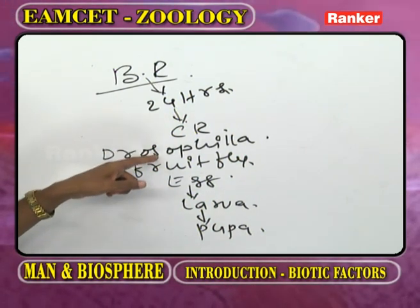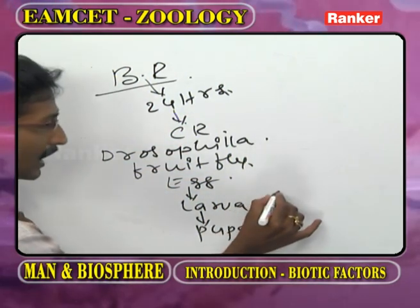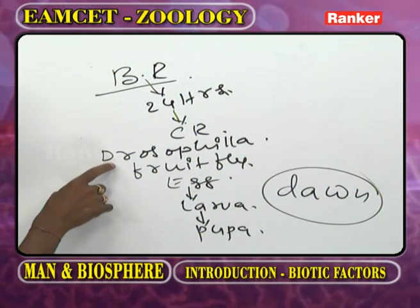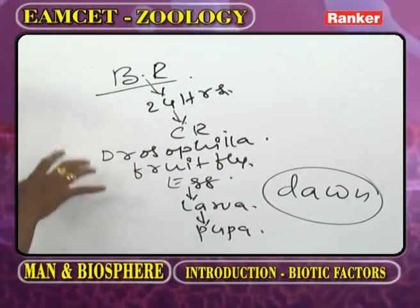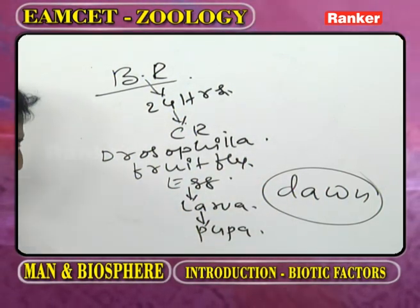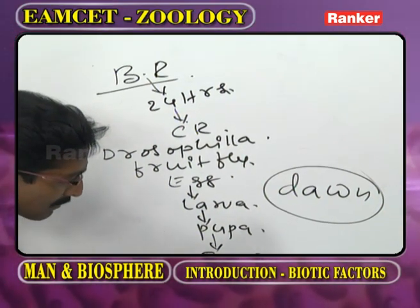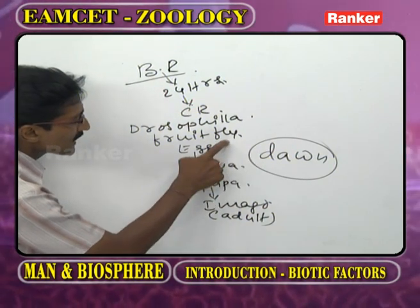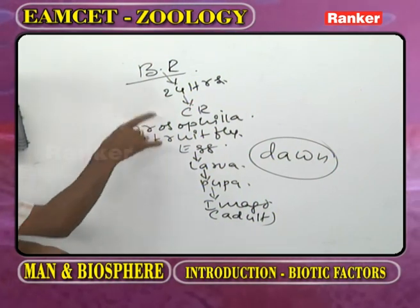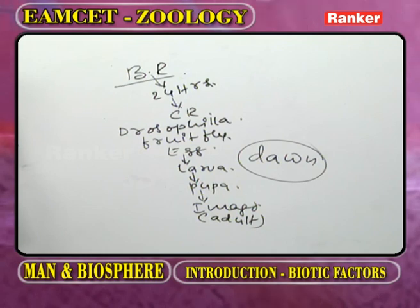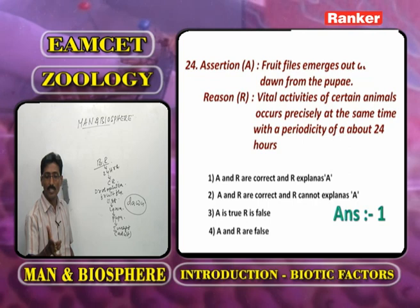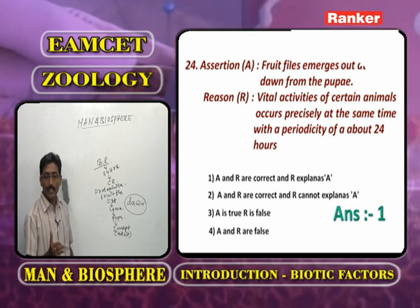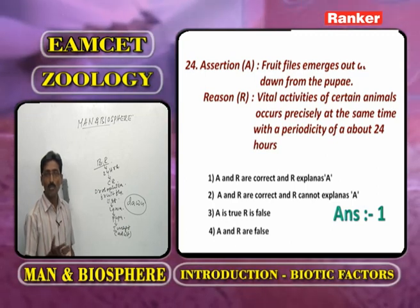In the life history of Drosophila, every year in the early hours of the day, the imago (adult) emerges from the pupa. This emergence is associated with 24 hours of the day, making it a circadian rhythm. The assertion states that fruit flies emerge at dawn from pupae.